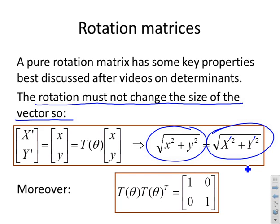Moreover, you can show that if you multiply this rotation matrix by its transpose you must get the identity.